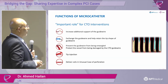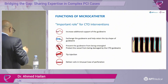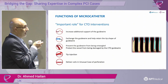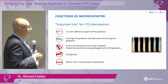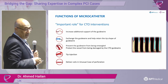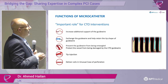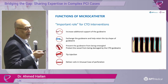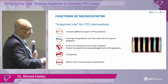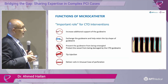About 8% of CTO failures occur because CTO wires cannot cross. With the help of microcatheters you can overcome certain problems. You can classify microcatheters in various ways - anatomically, strategically, or by the tip shape: tapered tip, straight tip, or dual lumen catheter.